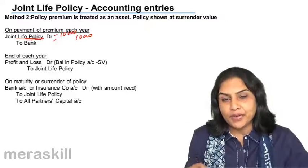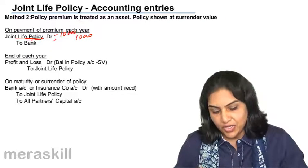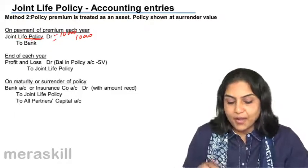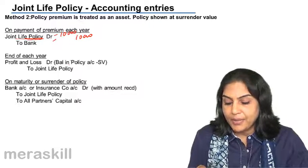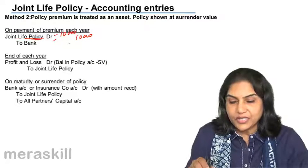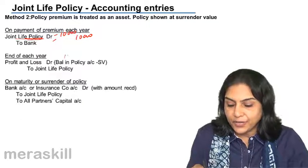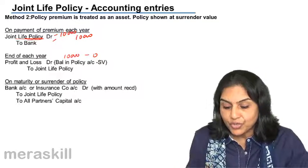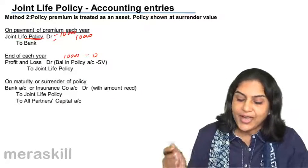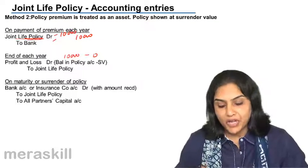Any excess amount — excess of the premium over surrender value — is transferred to profit and loss account. The entry is: profit and loss account debit with the balance in the policy account, in this case 10,000 minus the surrender value. In the first year in our example, the surrender value was 0, therefore the entire 10,000 in the first year would go to profit and loss account.